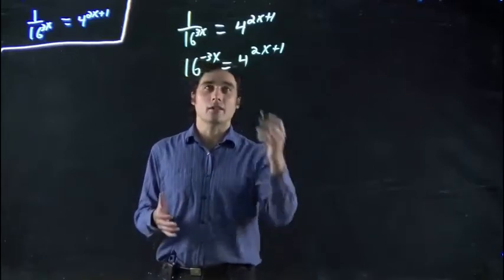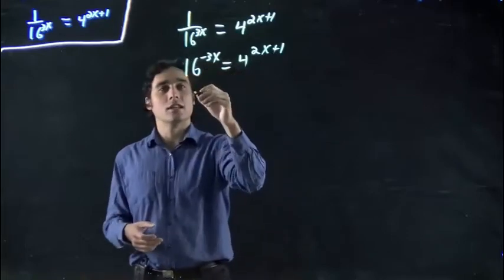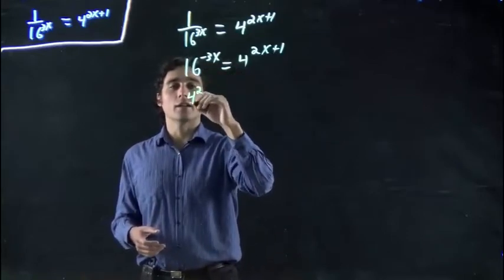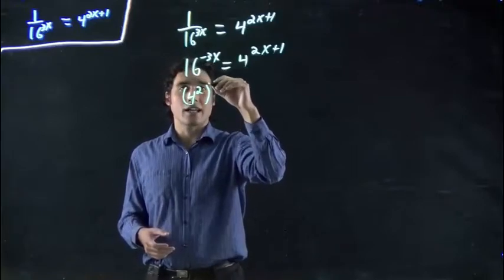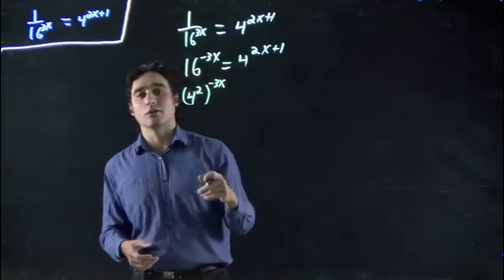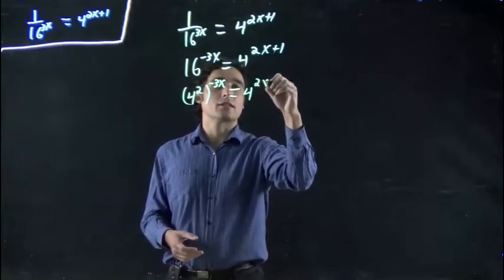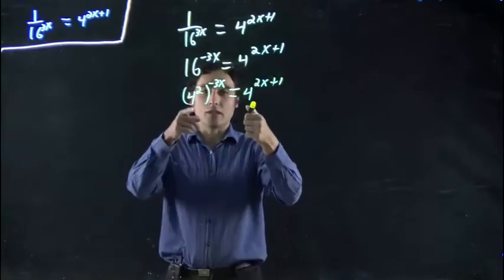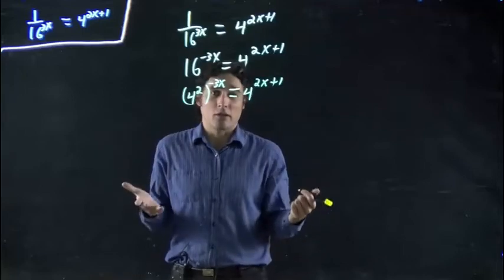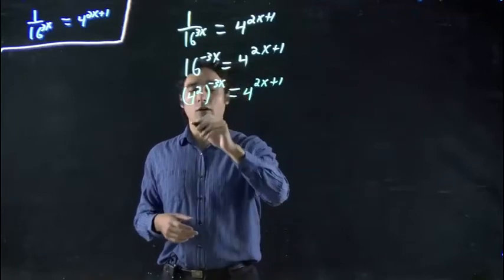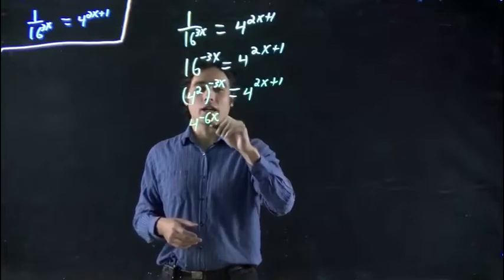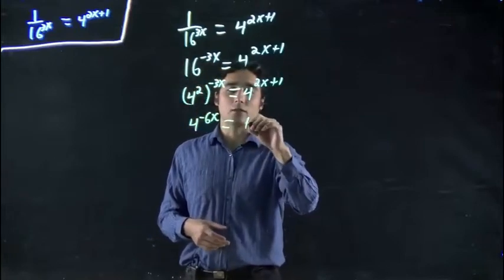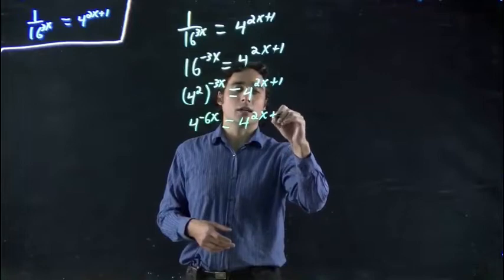So, might as well just do that, not have to convert both of these. Because I can think 4 squared is the same as 16. So, I'm replacing the 16 with 4 squared, and I still have the minus 3x outside. And that's equal to 4 to the 2x plus 1. Again, I can put these both to the power of 2, but why bother making my work more? So, remember, I have to multiply these out if I'm combining these exponents. So, I get 4 to the minus 6x equals 4 to the 2x plus 1.